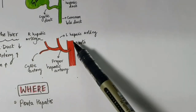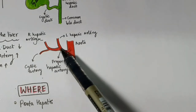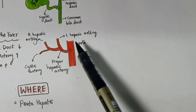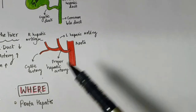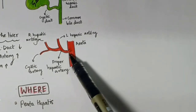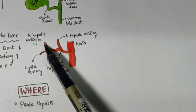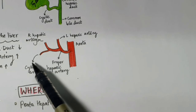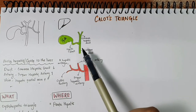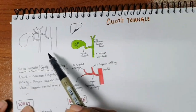We have the aorta, and from there we have the proper hepatic artery. The proper hepatic artery divides into a left hepatic artery and a right hepatic artery — how it arises from the aorta will be covered in a different video. From the right hepatic artery, we have the cystic artery. So now you know we have a hepatic duct, a cystic duct, and these hepatic arteries, and this is how they overlap in the area of the Calot's triangle.